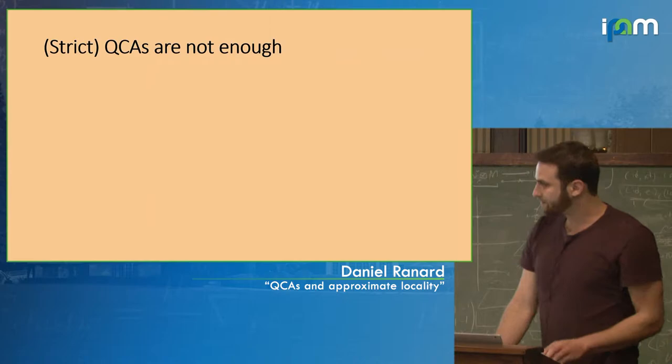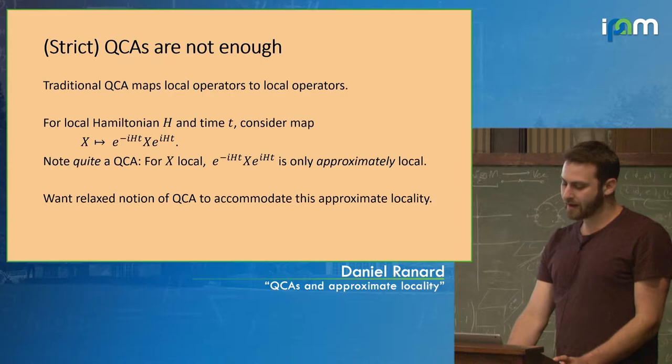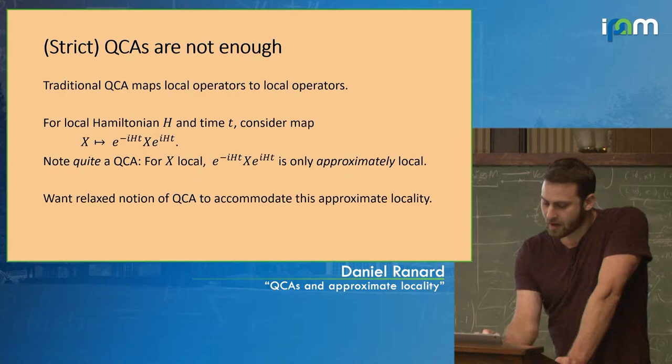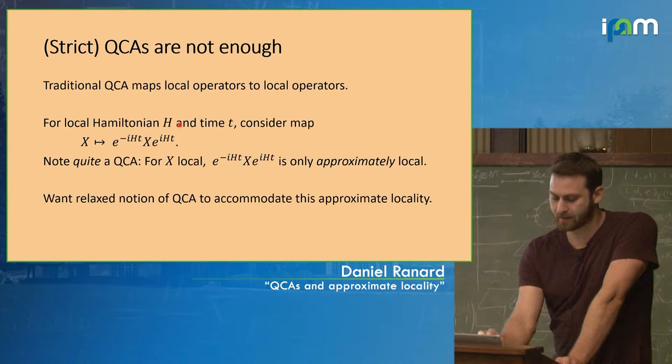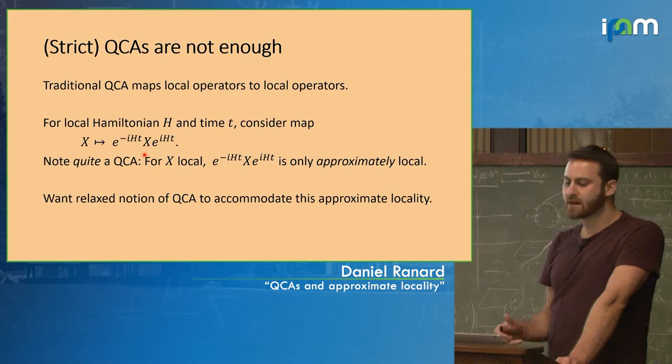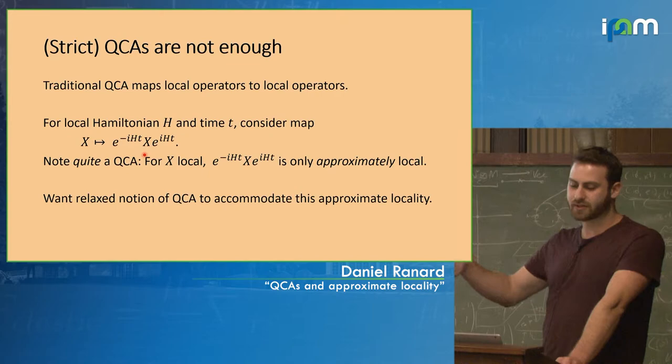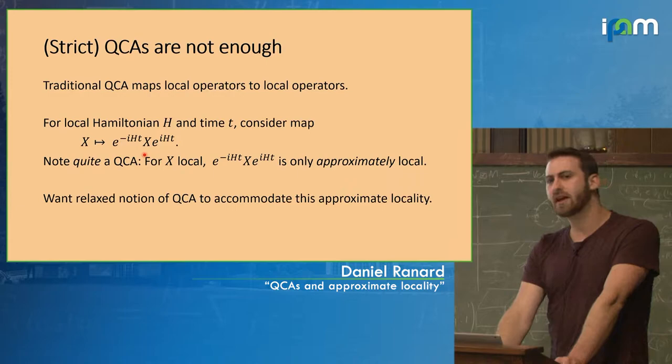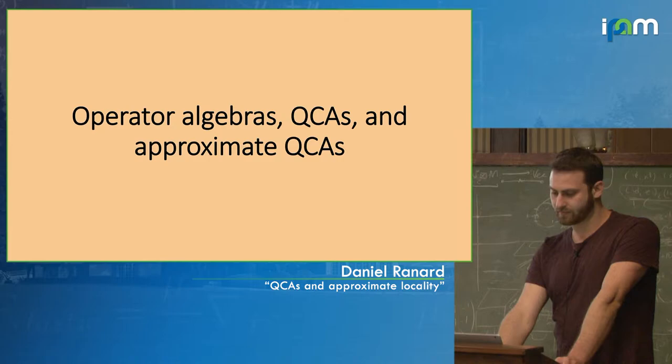The point is that strict QCAs are not enough to tackle physical problems. The QCA maps local operators to strictly local operators, but if we take a local Hamiltonian, fix a time T, and consider the map x → conjugated x, it's not going to be quite local — Lieb-Robinson bounds allow it to bleed outside some local region. So we want a notion of QCA that is more relaxed.